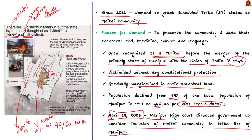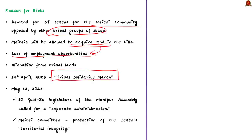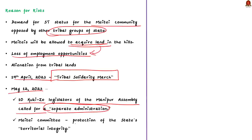This is where the ethnic clashes ignited. The demand for Scheduled Tribe status for the Meitei community has been opposed by other tribal groups who believe that if ST status is granted, Meiteis will be allowed to acquire land in the hills, resulting in loss of employment opportunities and pushing tribals out. They called for a tribal solidarity march, which led to violent clashes on 19th April 2023. On May 12, 2023, 10 Kukizu legislators called for a separate administration, while the Meitei committee urged protection of the state's territorial integrity — showing the clashes had resulted in complete demographic and geographical separation.